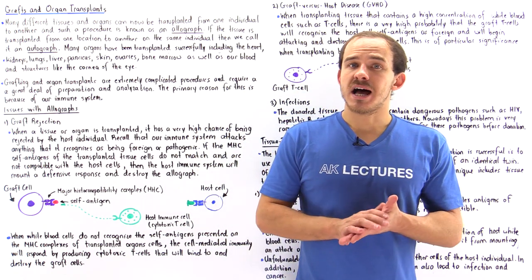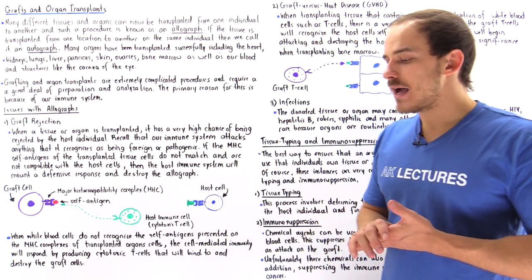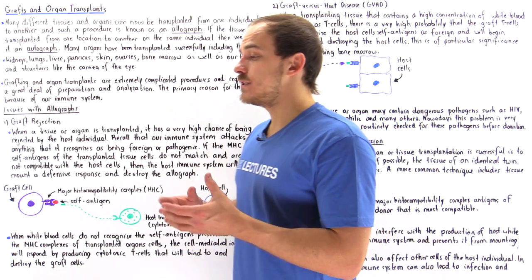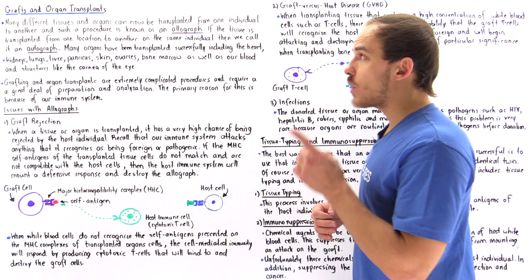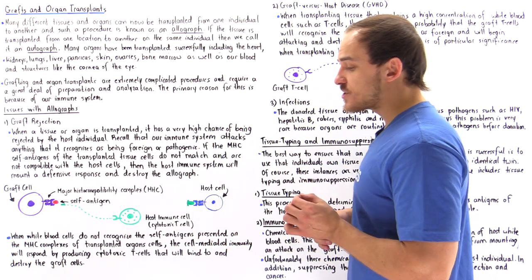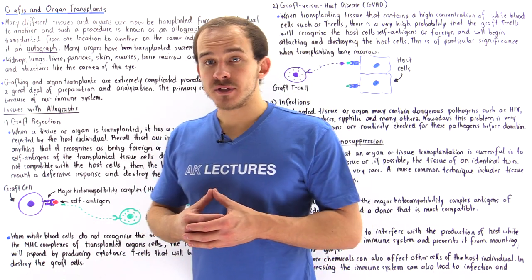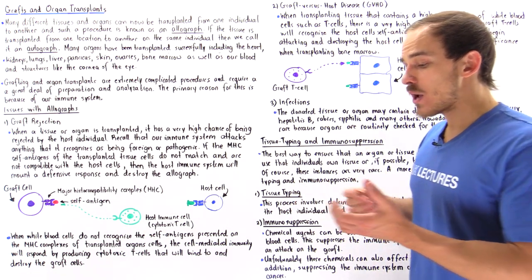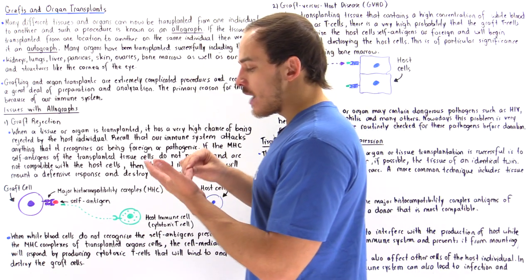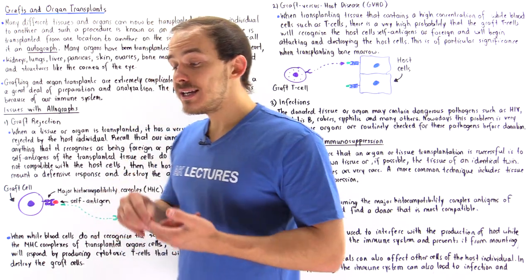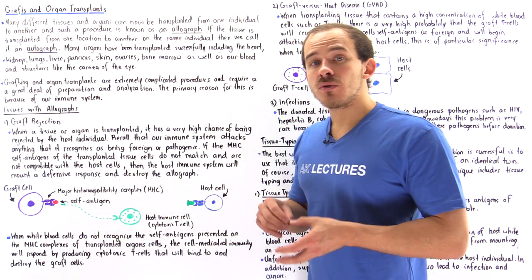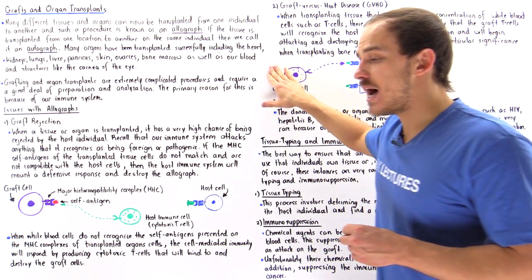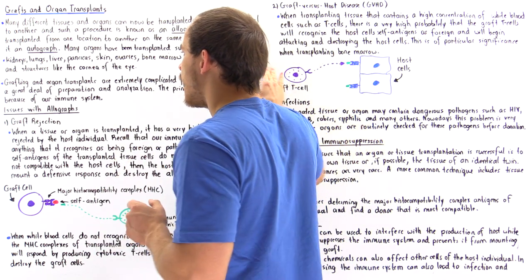Nowadays many different types of tissues and organs have been successfully transferred from one individual to another, a process known as grafting or organ transplant. Examples of successful organ transplants include the heart, lungs, liver, kidneys, bone marrow, ovaries, blood, and the cornea of the eye.